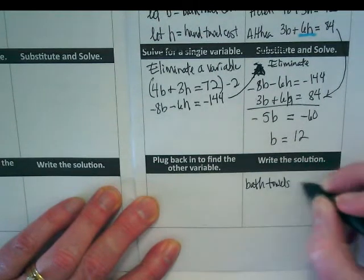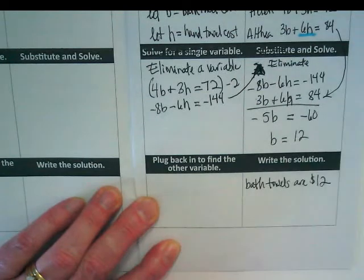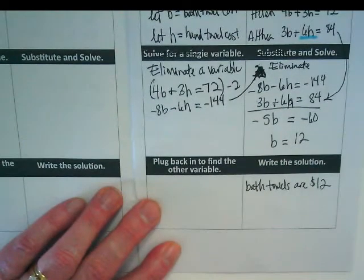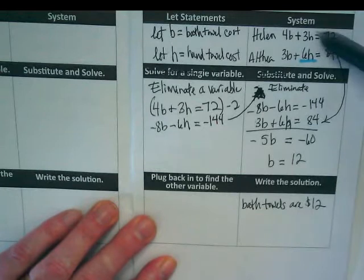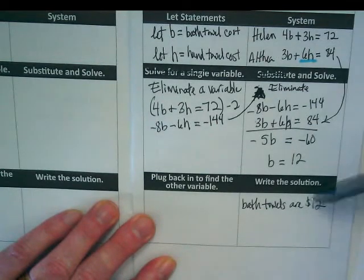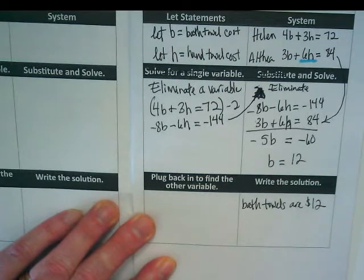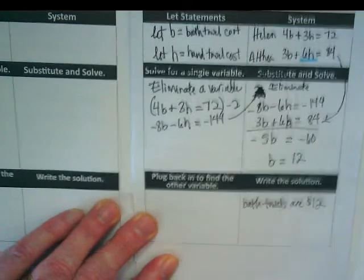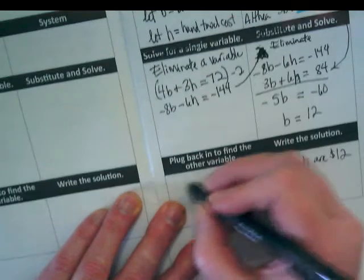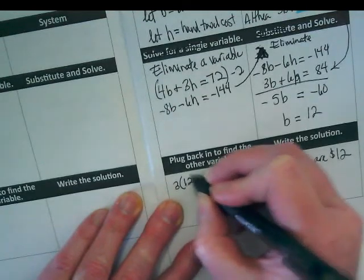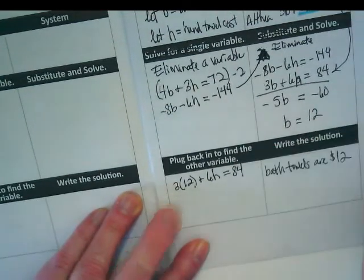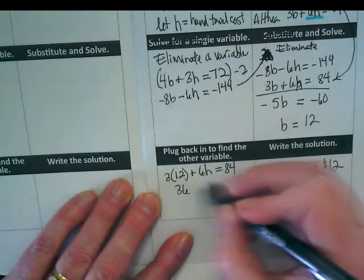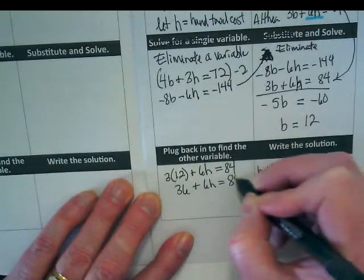Bath towels are $12. I think you can get better deals at Target, just saying. Now I'm going to go back to one of my two original equations. And I'm going to substitute this 12 in for one of the b's. Do you guys want to use Helen or Althea? Let's use Althea because I used Helen this morning. 3 times 12 plus 6h equals 84.